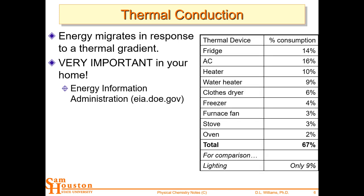This is incredibly important for your home. Look at all the different things that set up thermal differences: refrigerators, air conditioners, heaters, water heaters, clothes dryers. About 67% of home energy consumption is in these heating and cooling devices. Lighting is only about 9%, so even though it's a good idea to turn the lights out, that's really not going to save you that much.